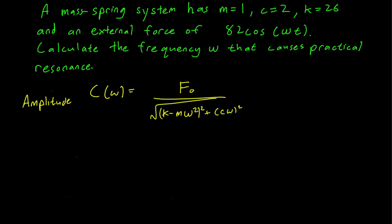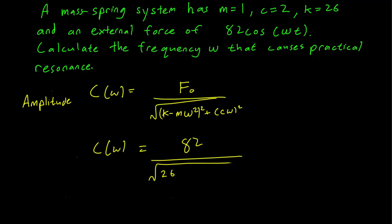Let's plug in all our values. C(ω) is equal to: F₀ is 82, that's the external force; k is 26; m is 1 — so we have 26 minus omega squared, quantity squared, plus c is 2, so that gives us plus 4 omega squared in the denominator.